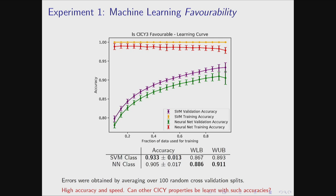These are the results of the first experiment on machine learning favorability. The top curves are the training accuracy curves for the neural net and support vector machine, and the curves below are the validation curves. The X-axis is the fraction of data used for training, so accuracy improves as you train with larger fractions of the data. The Y-axis is accuracy. This was a binary classification problem — we input a CICY matrix and ask whether it is favorable or not — and it is able to do this with a high degree of accuracy.